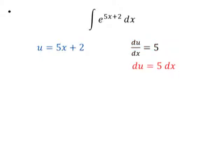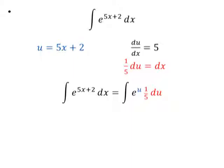Solving for du, I get du is equal to 5dx, or one-fifth du is equal to dx. Substituting that back into my original problem, I get the integral of e to the u times one-fifth du. And then using the constant rule, I can bring the one-fifth outside of the integral and get one-fifth the integral of e to the u du.